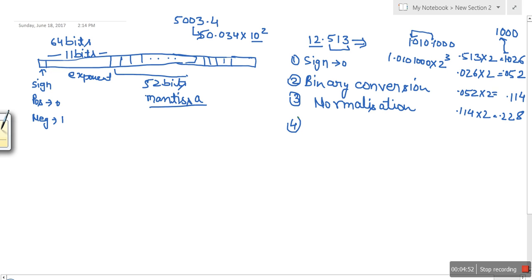Now the fourth step is to add bias. In double precision, a bias of 1023 is added to the exponent. What is the exponent? We got 3. So the number we have to store in the exponent bits is 1026. The binary of this number will be stored in the exponent.